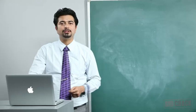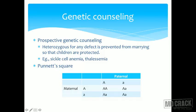Genetic counseling has two types: prospective and retrospective. Prospective genetic counseling is done before a couple has children — identifying if both partners are heterozygous for a defect. For example, if both carry sickle cell trait or thalassemia trait before marriage, they can be informed of the risk to their children. A Punnett square is the table used to predict what genes will be passed in various genetic combinations.